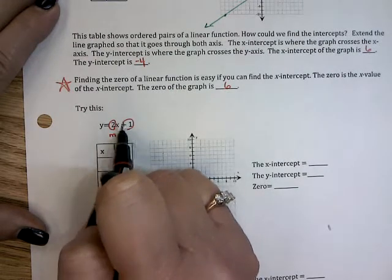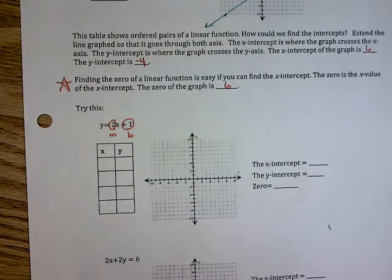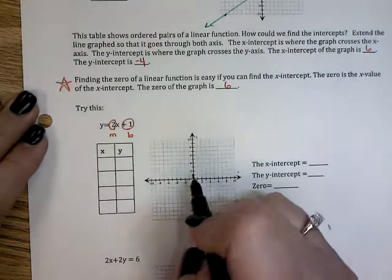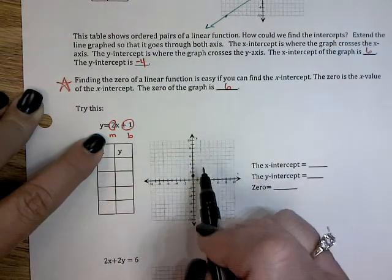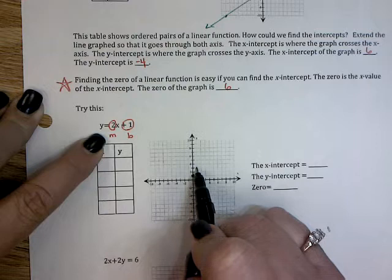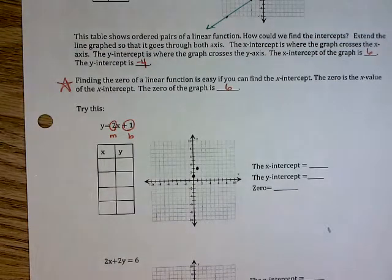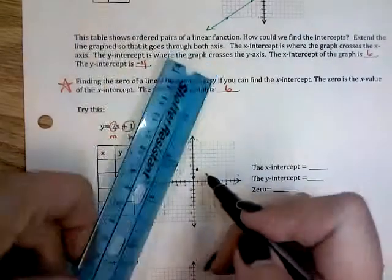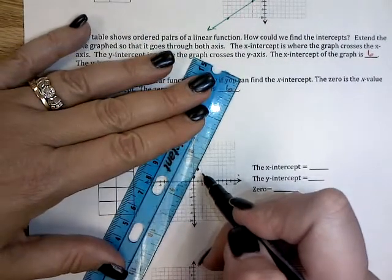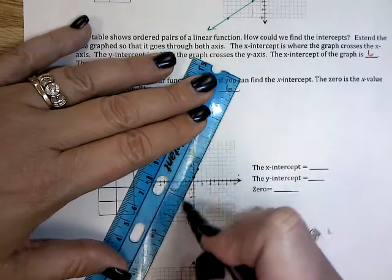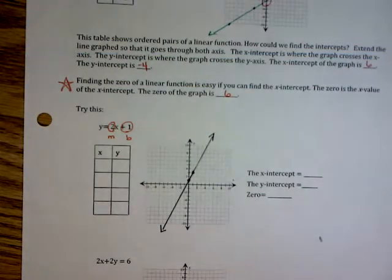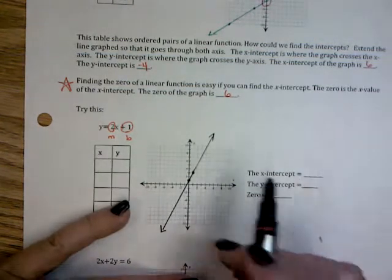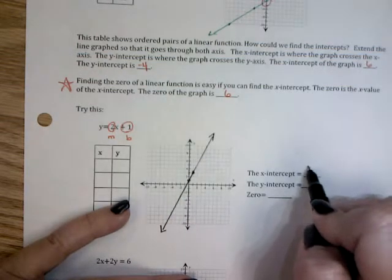We know from last class that we graph the intercept, which is the b. I move the slope, which is 2 over 1, so that means I will go up 2 over 1. I will take my ruler and draw a nice pretty line.